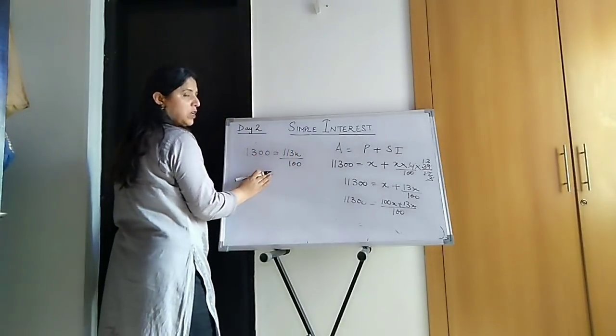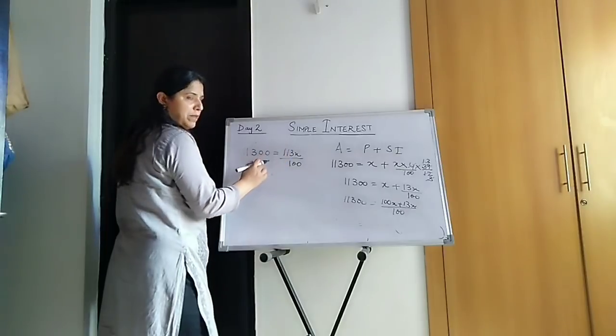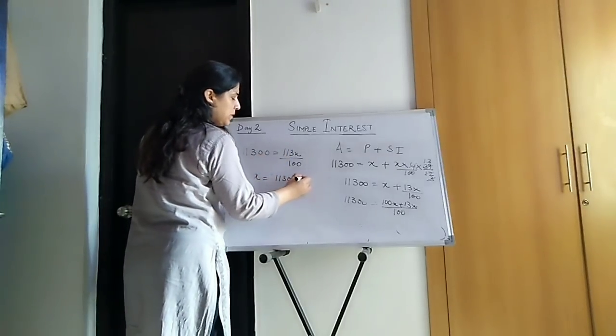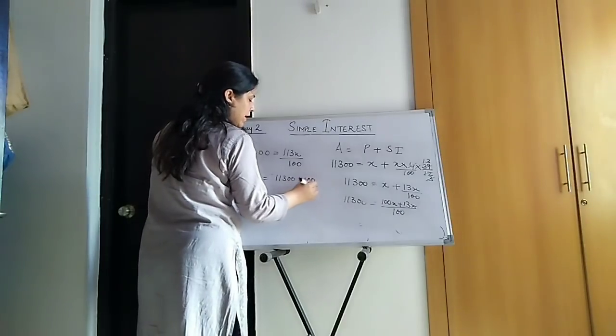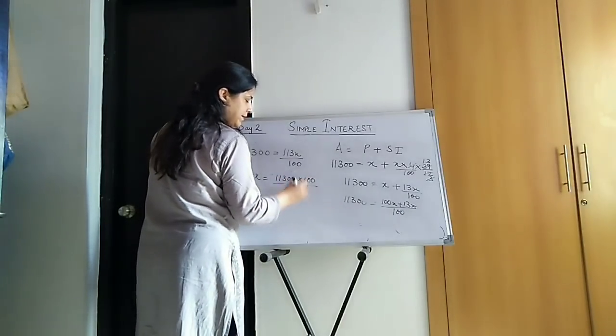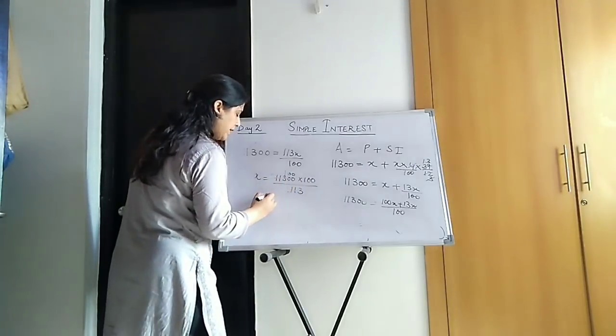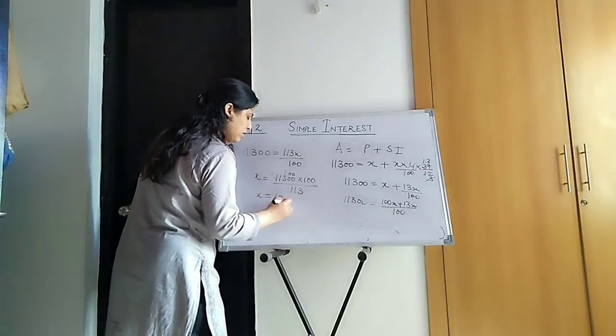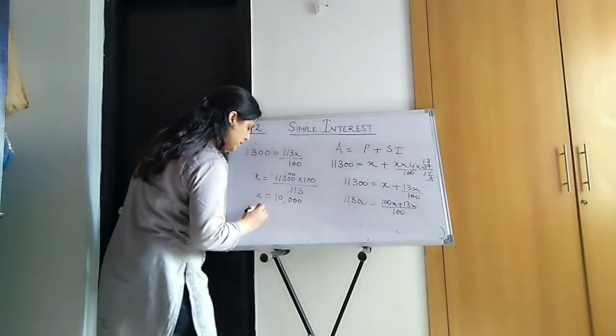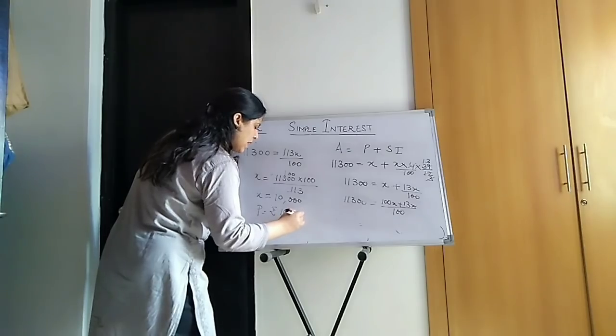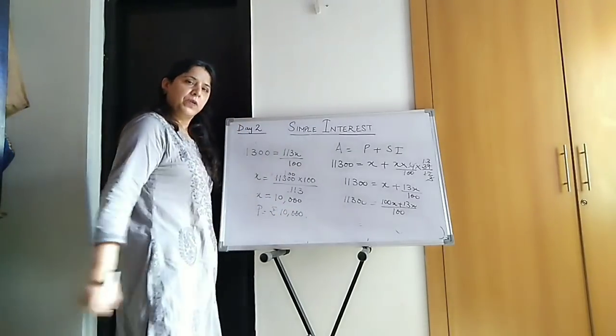Cross multiply: this into this divided by. So X is equal to 11300 into 100 divided by 113. 113 is 113, so 100 into 100, X is 10,000. So we get the principle as rupees 10,000.